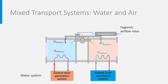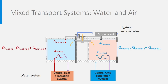Very often, mixed systems are used. The hygienic air is heated or cooled in an air handling unit, bringing part of the needed heat and cold, and the remaining part is handled by a water system. This saves a lot of space in the building. You see on the slide on the left a heating mode and on the right a cooling mode.